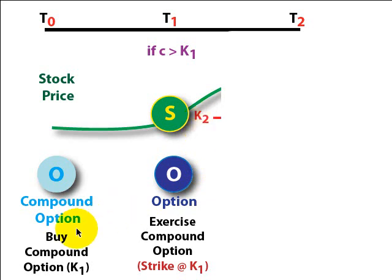First, when we purchased the compound option, K1 is the price we pay in order to exercise initially to purchase the call option. And then that call option has K2, its own strike price.